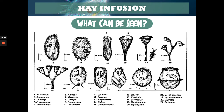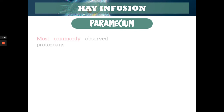Generally, the protozoa you can see are usually non-pathogenic — they do not cause that much disease in humans. But why are we performing this? Because we just want to see the other members of the groups or the other types of protozoa. We're going now to some examples of protozoa that can be seen in the hay infusion, starting first with paramecium.